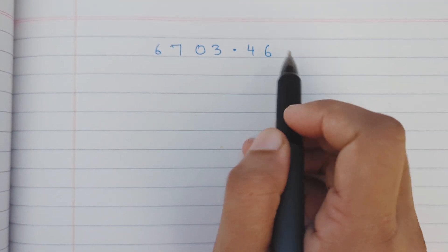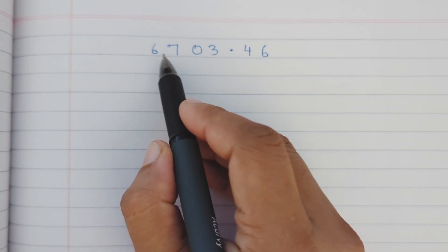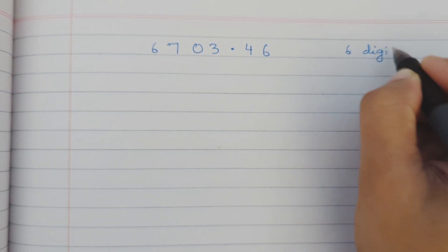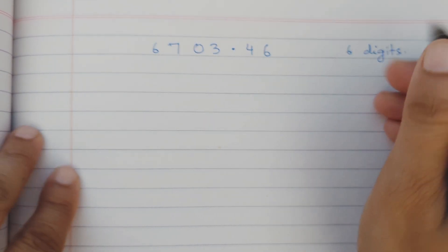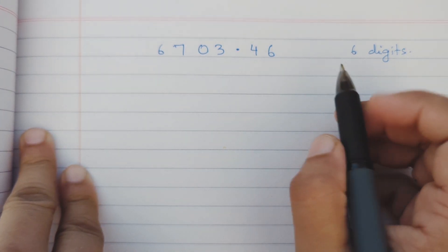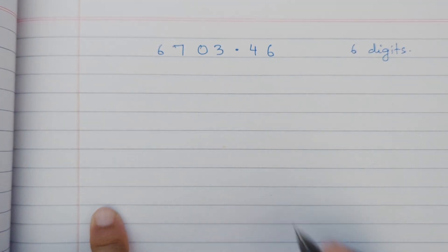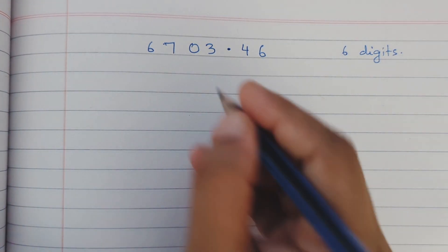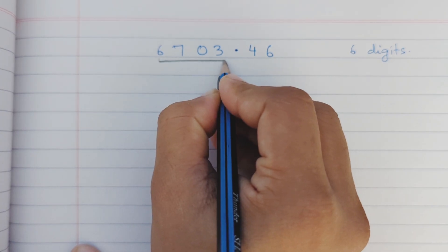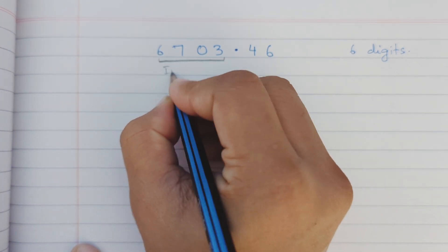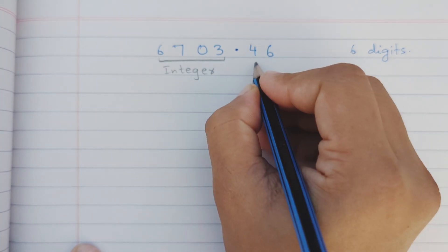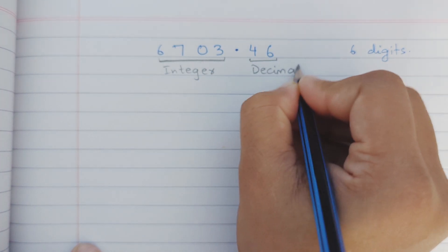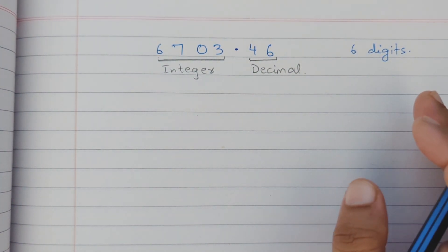In this number we have six digits. All the individual numbers in a number are called its digits. Whenever you see a decimal point, it means the number has two different parts. The part before the decimal point is called the integral part — it is the integer — and the part after the decimal point is called its decimal part.